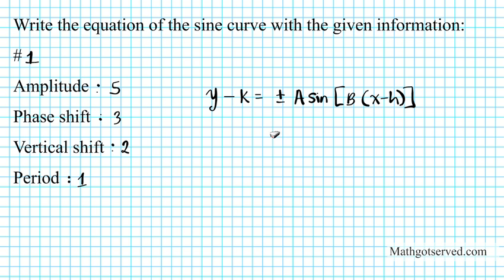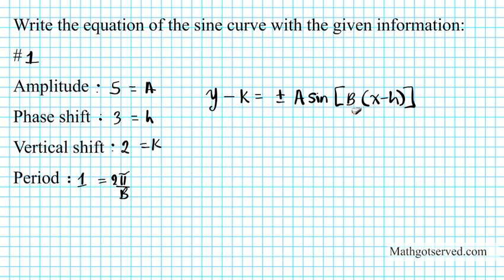This is the equation we need to write down for the sine curve with this information. The amplitude is a, phase shift is h, and the vertical shift is k. You have to be really careful with the period — this is the technical part of the whole process. The period is 2π over b. Note that in the equation, b is what's factored out — it's what you multiply x minus h by. So we actually have to solve a proportion here to find out what b is.